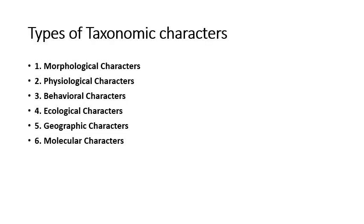There are different types of taxonomic characters. Number one is morphological characters. Number two is physiological characters. Number three is behavioral characters. Number four is ecological characters. Number five is geographic characters. Number six is molecular characters. Now we will discuss these characters one by one.